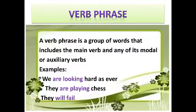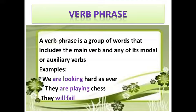Next, verb phrase. A verb phrase is a group of words that includes the main verb and any of its modal or auxiliary verbs. Examples: we are looking hard as ever. They are playing chess. They will fail. The colored portions in the sentences are verb phrases.